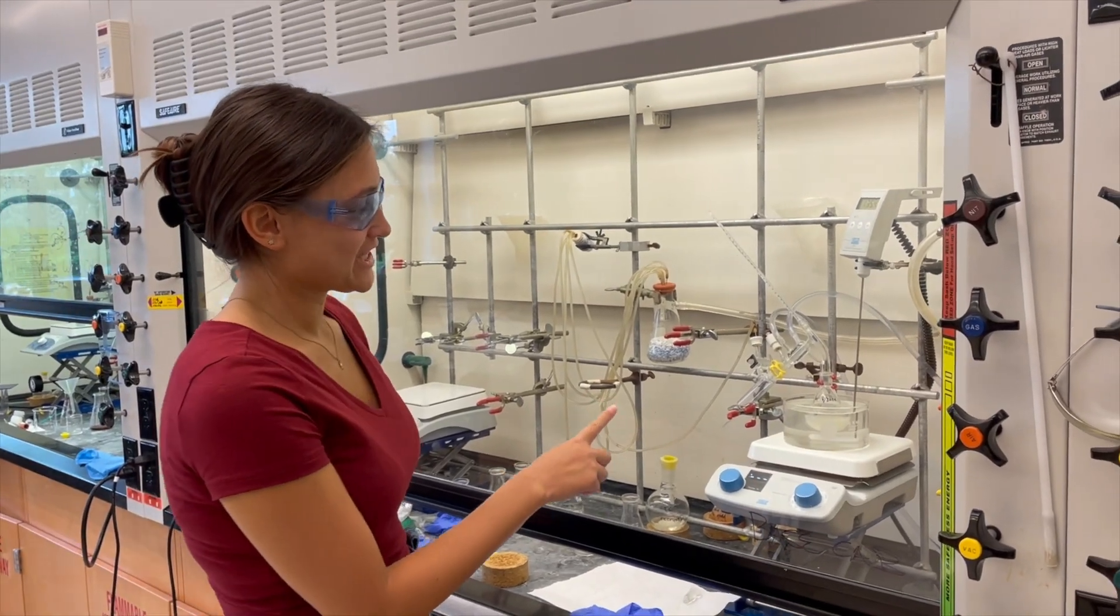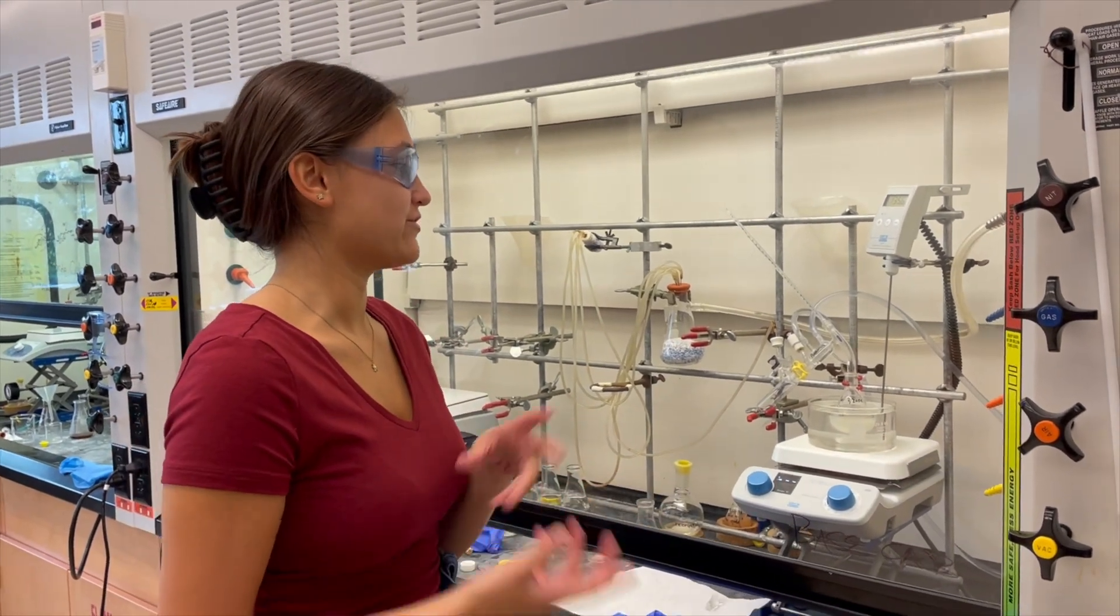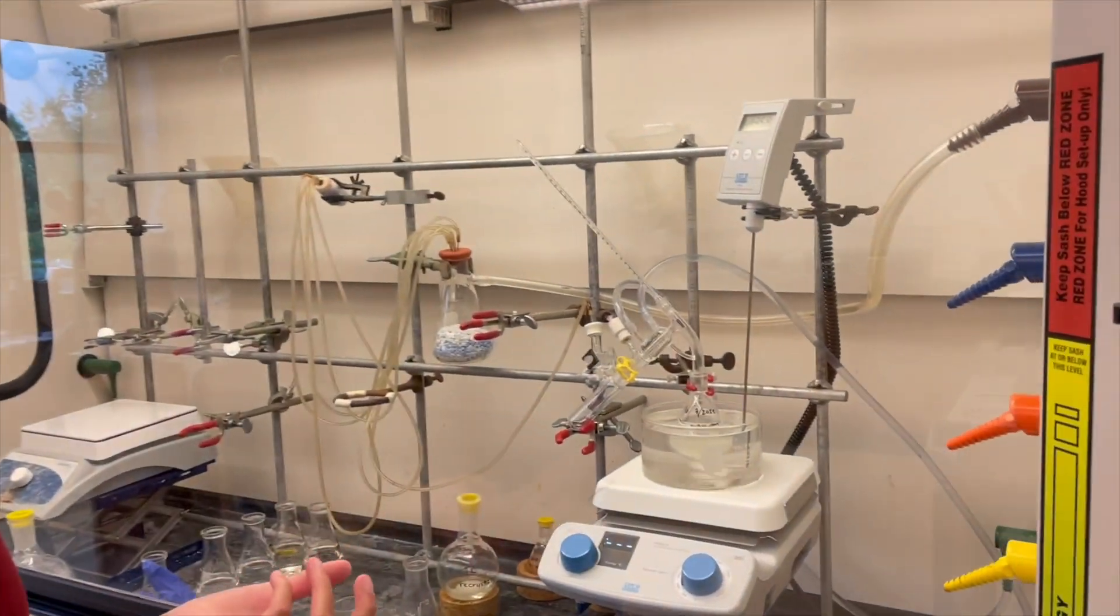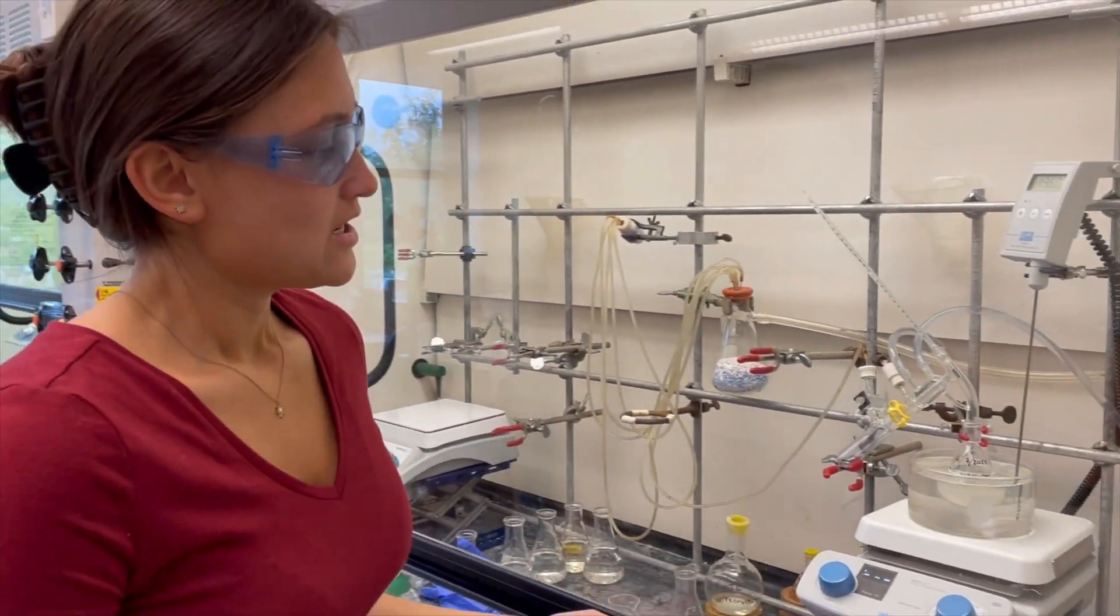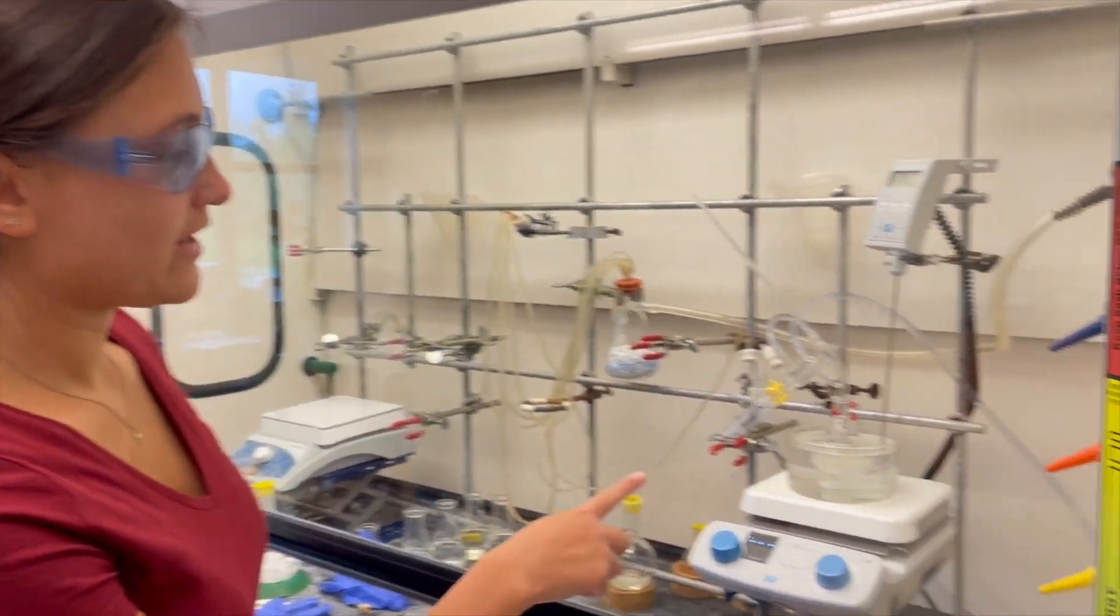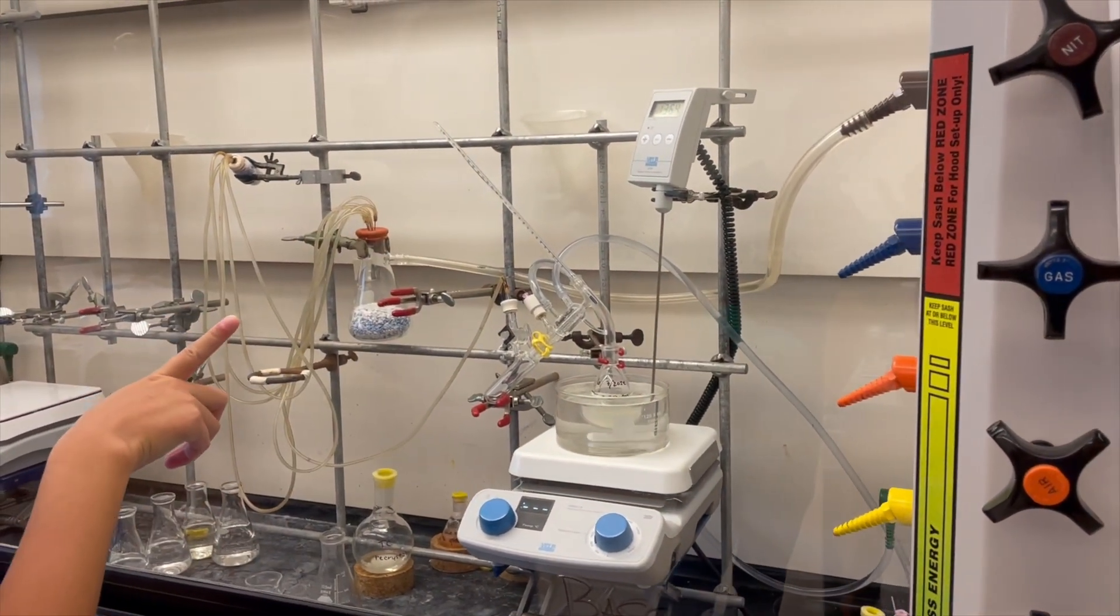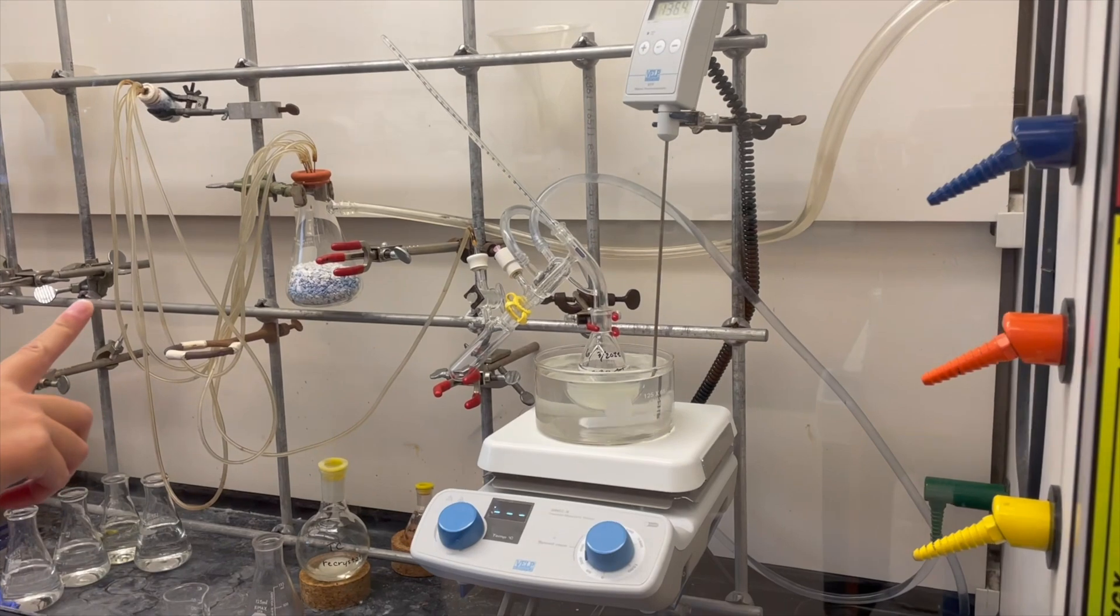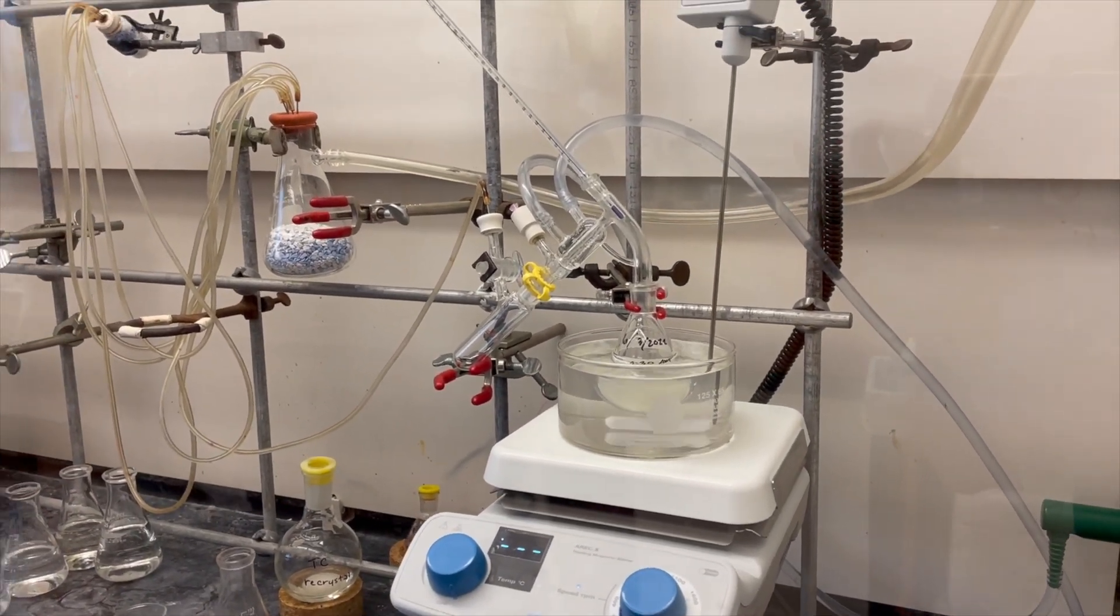Right now I'm doing a distillation. A distillation is basically where you take something that we use in lab that's kind of dirty and you distill it so that you can use a very clean version of it. So right now I'm distilling Hunig's base. The stuff that's in the oil bath right now is the dirty Hunig's base and it's basically going to move over to this glass over here and it's going to be super clean so that we can all use it. This is a base that we use on a day-to-day basis so it's important to have it be clean.